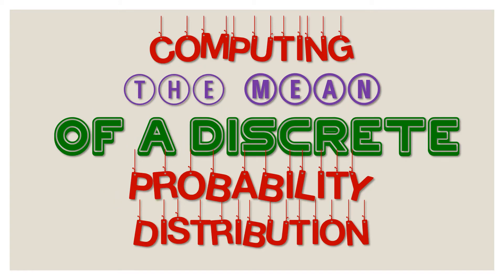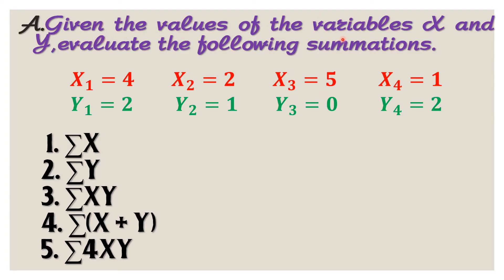Let's start with computing the mean of a discrete probability distribution. We have here the given values for the variables x and y, as you can see on the screen. All we need to do is to evaluate the following summations from 1 to 5. First we have here summation of x. Summation is just getting the sum of the values of the variables indicated. So here we have summation of x, meaning we're going to add the values for the x variables on the given data. We have 4 plus 2 plus 5 plus 1 equals 12. So this is now the value for the summation of x.